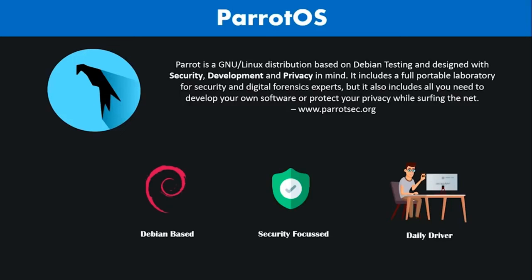Comparing two operating systems like Parrot OS and Kali Linux that are both meant for similar purposes — that is penetration testing — becomes really tough. Most of the factors boil down to a matter of personal taste rather than an objective comparison. Before moving ahead, let me list out a few similarities: both operating systems are tuned for penetration testing and network-related tools, both are based on Debian development standards, both support 32 and 64-bit architecture, both support Cloud VPS along with IoT devices, and both come pre-installed with their own arsenal of hacking tools.